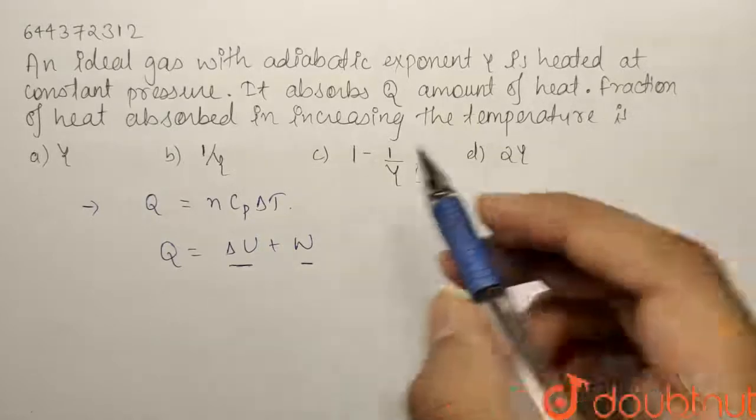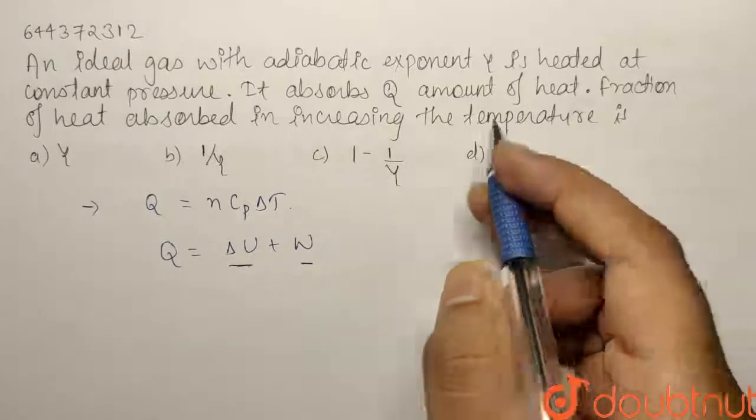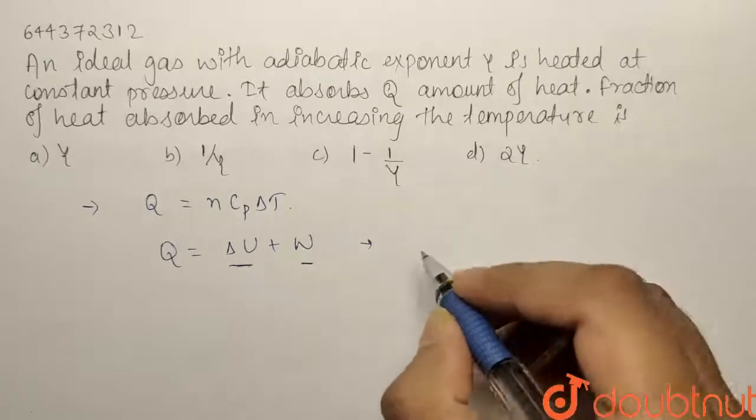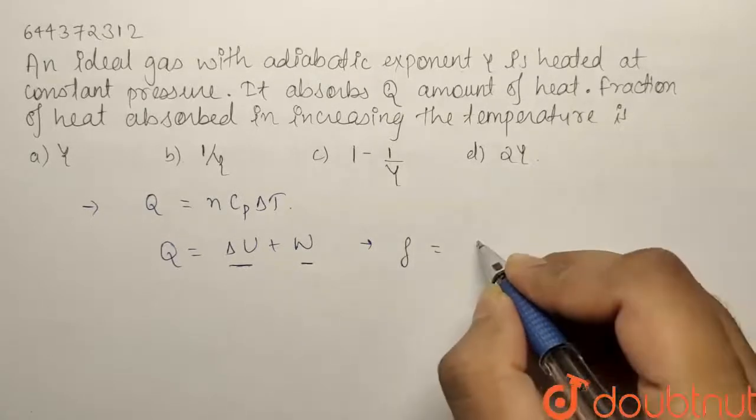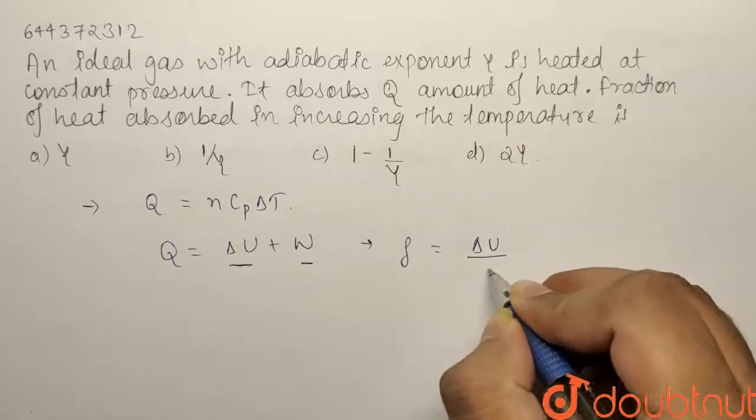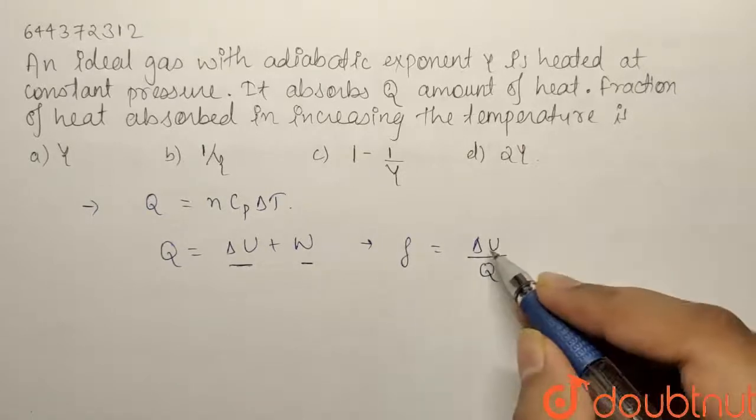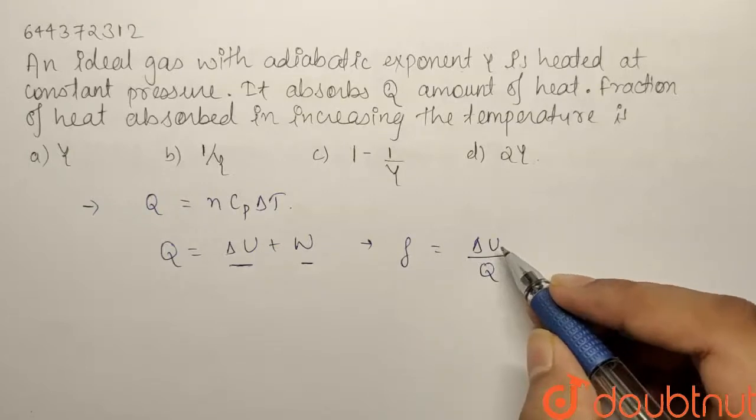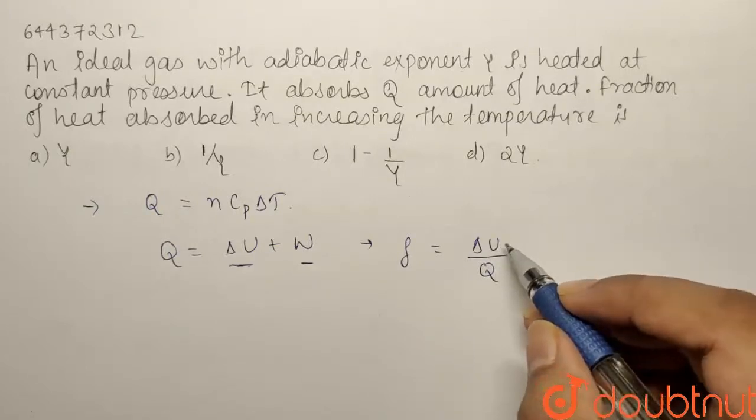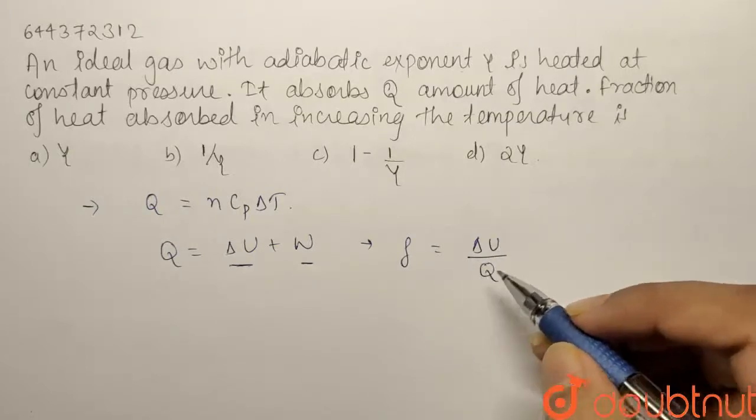So here we have to find out the fraction absorbed in increasing the temperature. Basically what we have to find is the fraction F that will equal ΔU by Q, that is the amount of heat that changes the internal energy or changes the temperature of the system divided by the amount of heat that we have given.